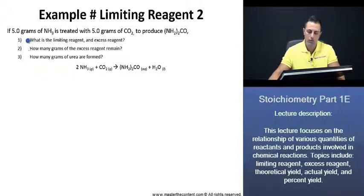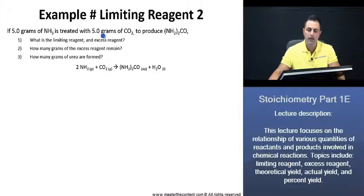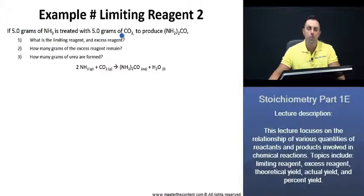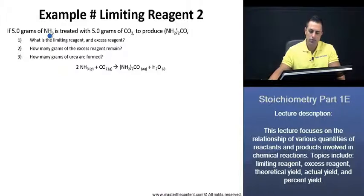To solve this problem, we'll begin with number 1. To find the limiting reagent and excess reagent, we can begin by taking the masses of the ammonia and the carbon dioxide and converting that into their moles, using their molar masses to find the amount of moles that are actually participating in our reaction. From there, we can find the limiting reagent and the excess reagent.